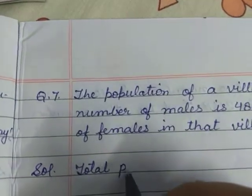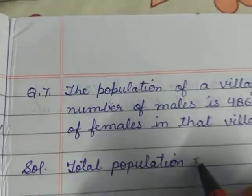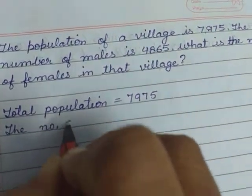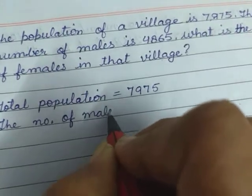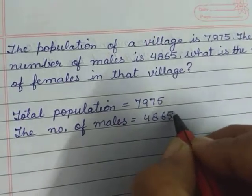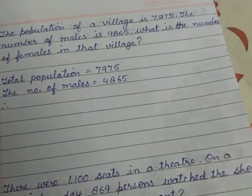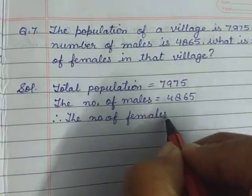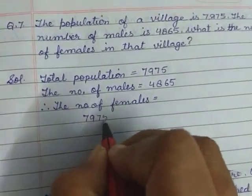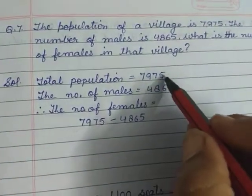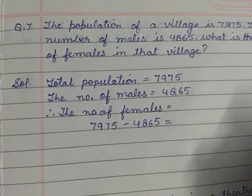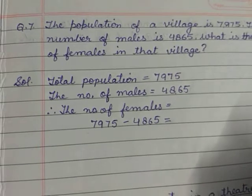Total population is equal to 7,975. The number of males is equal to 4,865. Therefore, the number of females is equal to 7,975 minus 4,865. Total population mein se jo male ka number hai, use minus kar denge, toh hamein pata chal jayega ki female ka number kya hai. 7,975 minus 4,865.